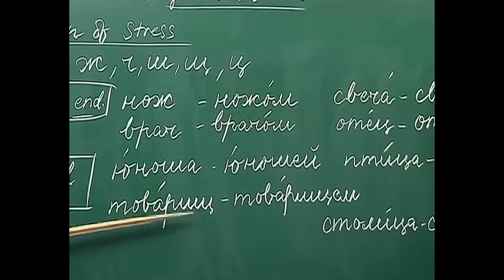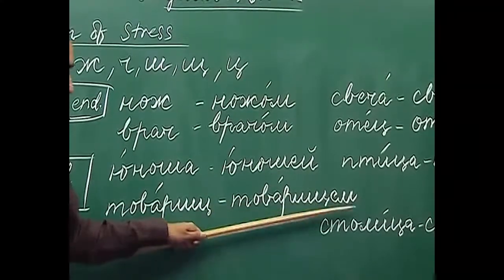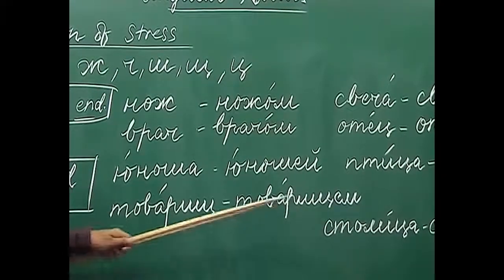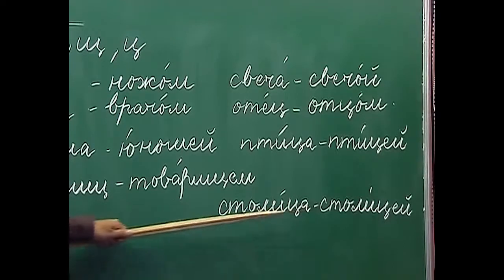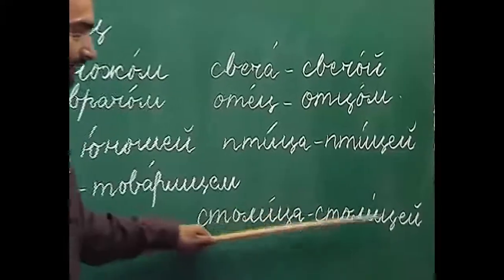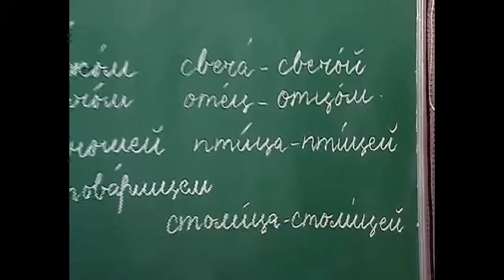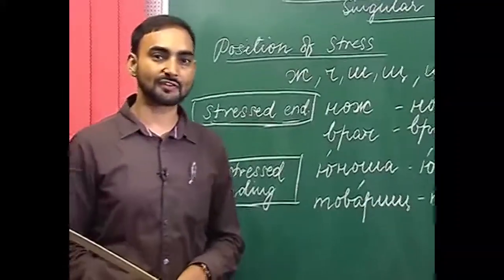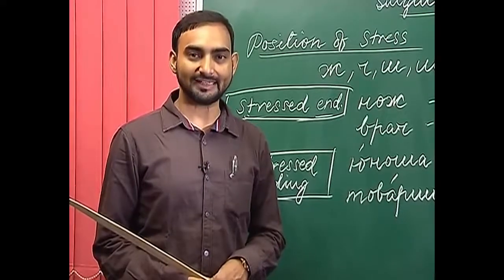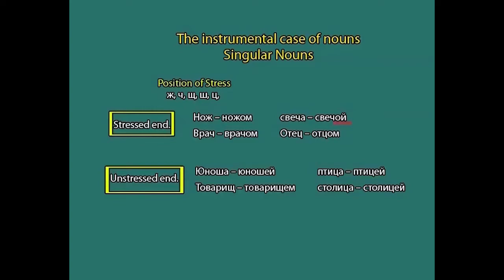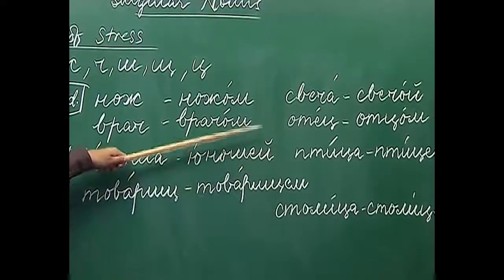Товарищ is a masculine noun with the ending -щ. When we use it in the instrumental case: товарищем — because the ending is unstressed. Столица ends with -ца and its stem ends with ц. In the instrumental case: столицей — because the ending is unstressed. So to summarize: if the ending is stressed in a noun whose stem ends with ж, ч, ш, щ, or ц, we use -ом or -ой. If the ending is unstressed, we use -ем with masculine nouns and -ей with feminine nouns.